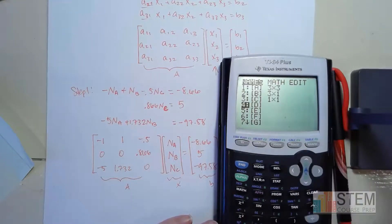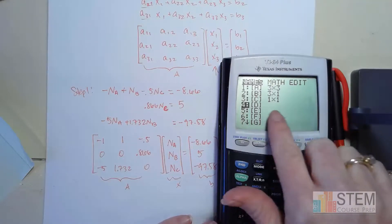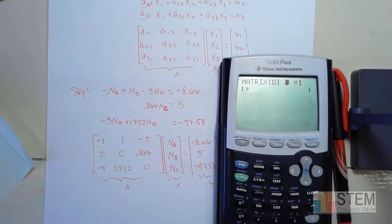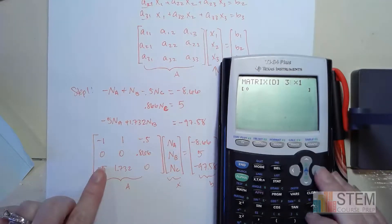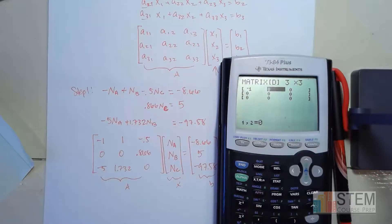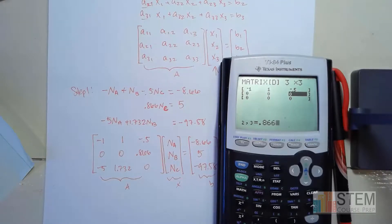Let me show you how to enter it from scratch using a new matrix slot — let's pick number 4. Go to edit, hit 4, and now you have a new empty matrix. First enter your dimensions: rows go first — I have 3 rows and 3 columns. Notice it gives you a matrix. Now enter all your values: −1, 1, −0.5, then 0, 0, 0.866, then −5, 1.732, and 0. Now we're done — this is matrix D in my calculator.